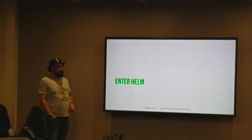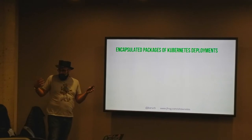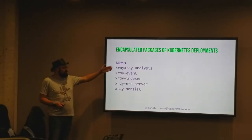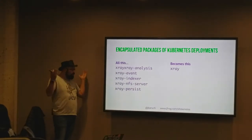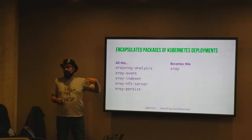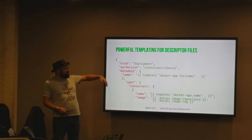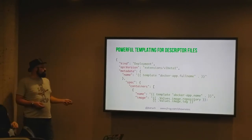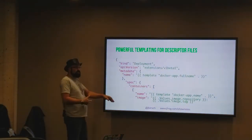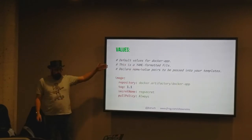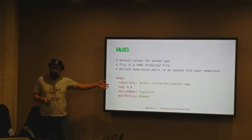Helm encapsulates packages of Kubernetes deployments into discrete units. All those X-Ray services now become a single Helm chart that can have one or more Kubernetes services, referred to by name. 'I want to install X-Ray' - boom, whatever it takes will be installed. It also solves the problem of those descriptor files with powerful templating, so instead of hardcoding `1.0` or `1.1` you use a template variable.